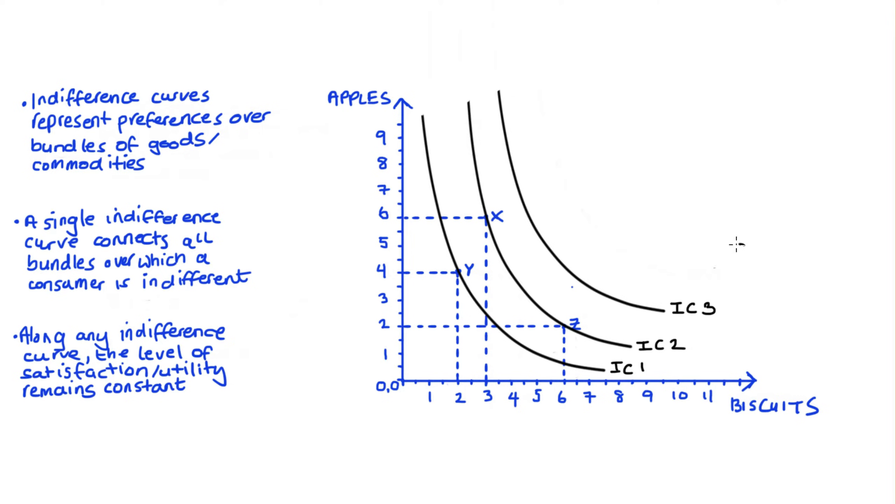Now with curves that look like this, we associate a higher level of utility or satisfaction with indifference curves that are further out from the origin. So I prefer any bundle on IC2 or IC3 to any bundle on IC1. And I prefer any bundle on IC3 to any bundle on IC2 or IC1. Sometimes people put arrows on the diagrams like this. And this shows which curves represent higher levels of satisfaction.